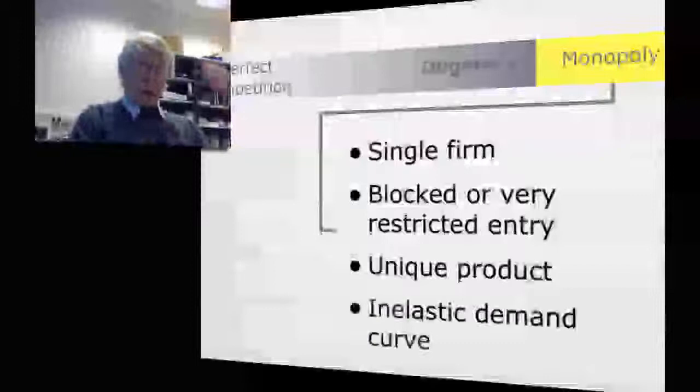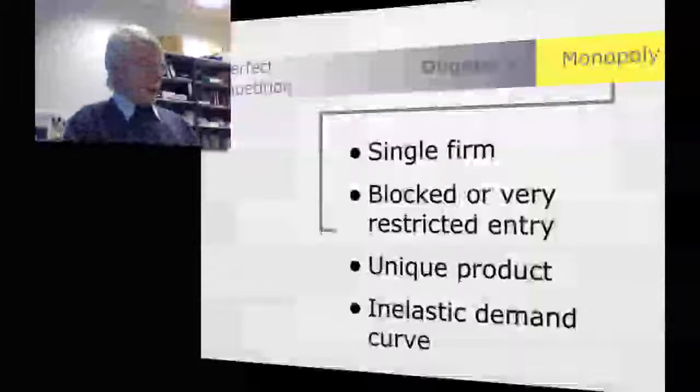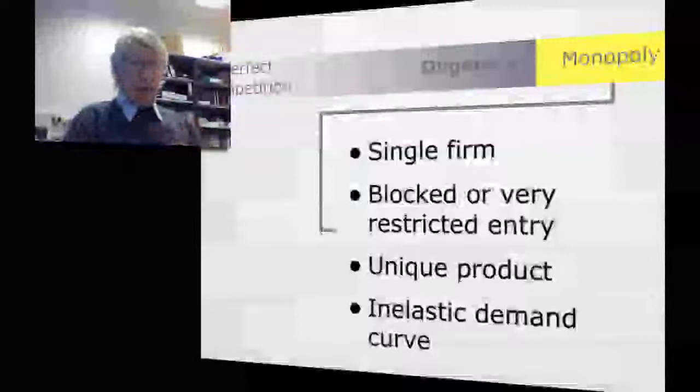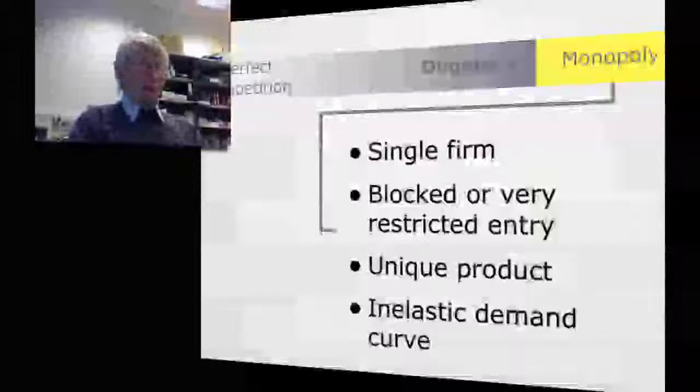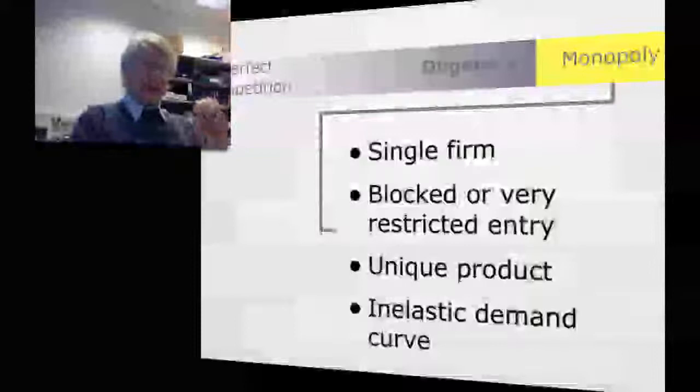Now this combination of things leads to the notion that the demand curve is very inelastic. Really all that is saying is that given there's only one firm producing this product, if you want to buy the thing you have to buy from this firm. So if they double their price, the amount demanded is going to decrease but not by that much, because there's no substitute. So that leads to an inelastic demand curve.